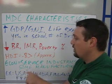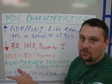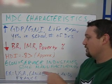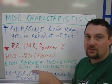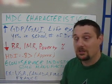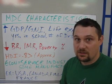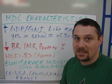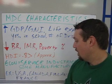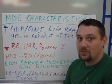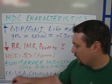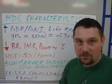Their HDI score has to be above 0.8 — though that's approximate; some countries classified as MDCs may have a score of 0.75. Their economy shifts from manufacturing to service industries. A service industry is something like a teacher, accountant, doctor, or lawyer — industries where you're not physically making anything but providing a service to make someone's life easier. We do still have manufacturing; not every single thing we use is made overseas. Some example countries are America, Canada, Finland, and France.